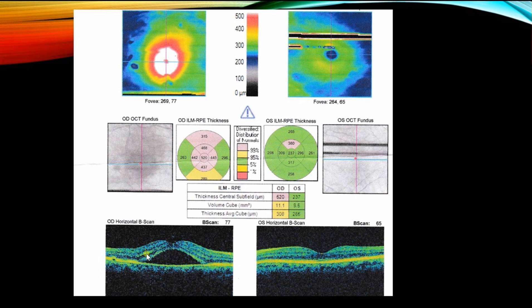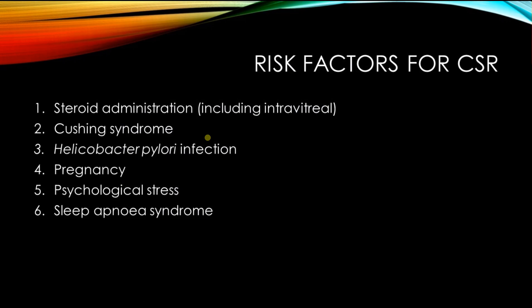The typical outer nuclear layer and outer plexiform layer appear to be in their usual shape. The thickness is 520 microns in the central area, and it is also involving the perifoveal area at 445 and 442, going up to the superior area.